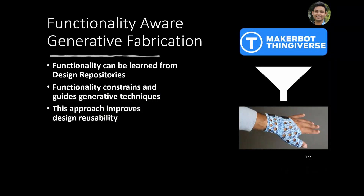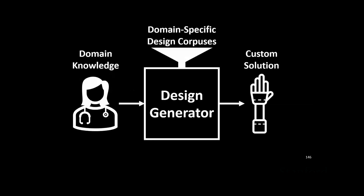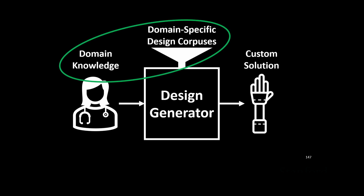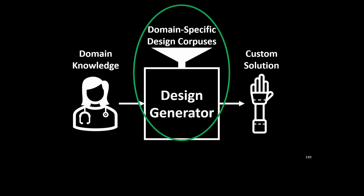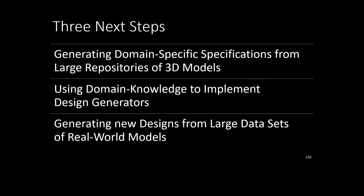Functionality-aware generative fabrication uses resources like design repositories such as the NIH Thingiverse, constrains generative techniques to where they're most useful, builds on the domain expertise of the original creator, and improves design reusability with minimal modification steps. Broader next steps include using domain knowledge to sort and filter design repositories to label datasets more effectively, taking domain knowledge to build design generators without programmer assistance, and building generators directly from repositories themselves — a wide open field for digital design tools supporting a wider set of users than just engineers.